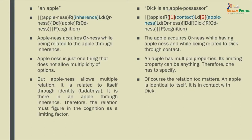An apple is always an apple — it always has apple-ness. That way, an apple is ever limited by apple-ness. But it is a qualifier only when it qualifies something, not otherwise. What happens when it becomes a qualifier? It acquires a property called qualifier-ness. This is a very, very important point.